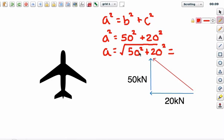Now unfortunately, me being silly, I don't have a calculator with me, so I'm going to have to do some mental maths. So 50 squared is 50 times 50, so 5 times 5 is 25, add 2 zeros to 2,500. 20 squared is 400.